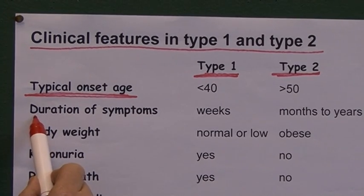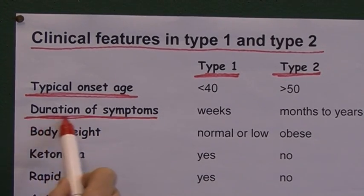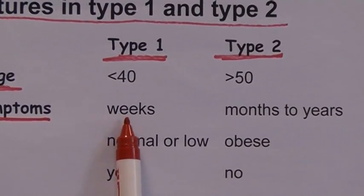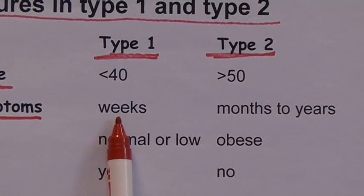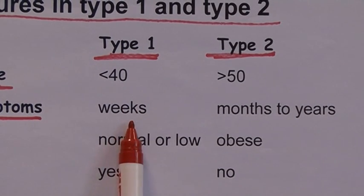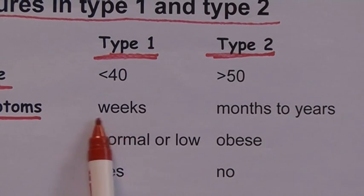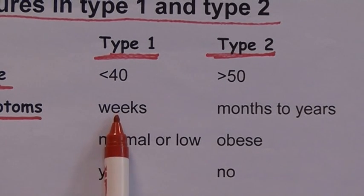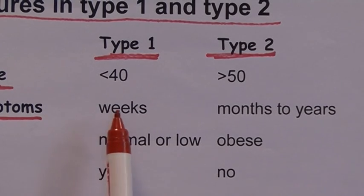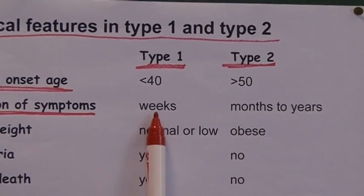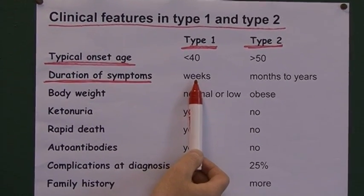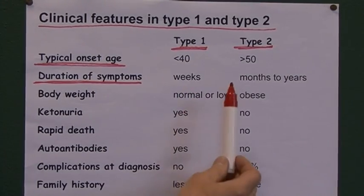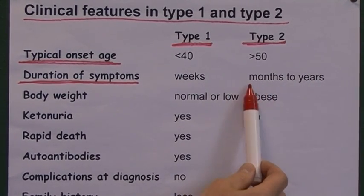What about duration of symptoms? In type 1 diabetes, the autoimmune destruction of the beta cells in the pancreas can take years to develop, but clinical features only present when 80 or 90 percent of the beta cells have been destroyed. Therefore, a patient with type 1 diabetes typically only complains of being unwell for a few weeks — it's a relatively acute diagnosis, even though the pathological processes have been going on for some time.